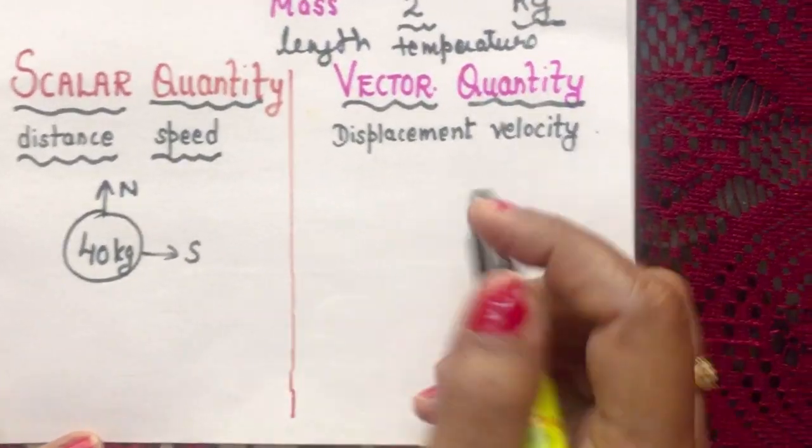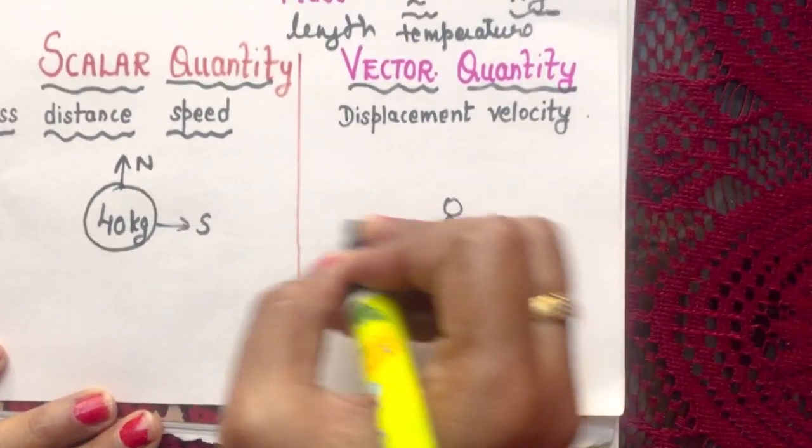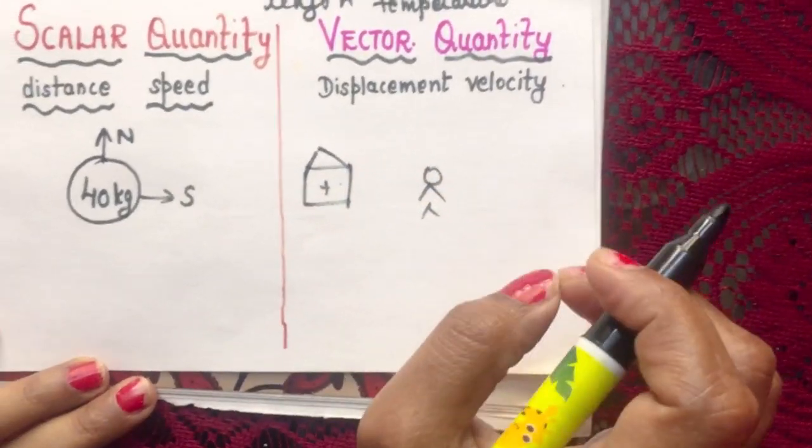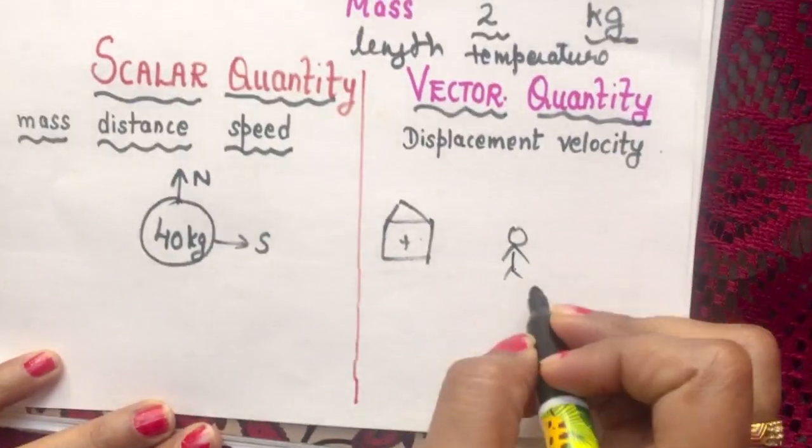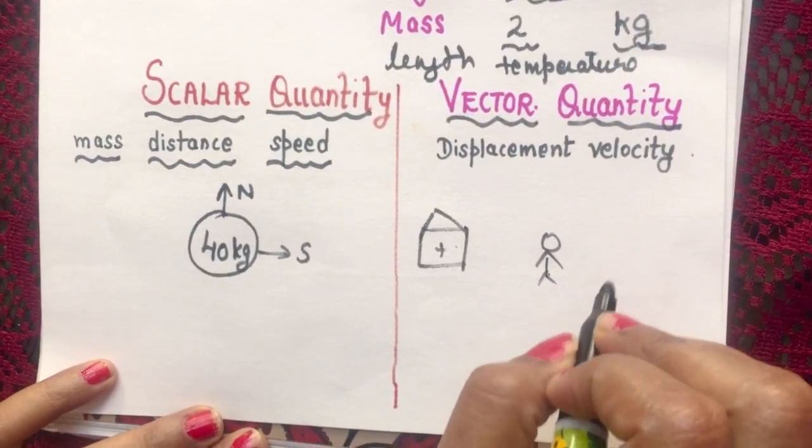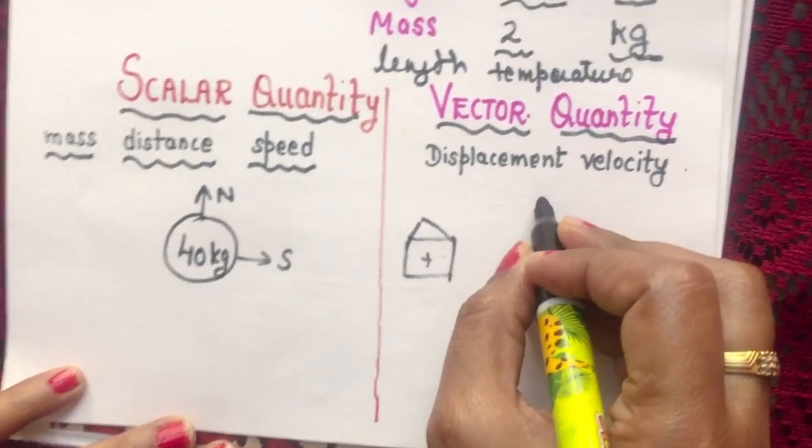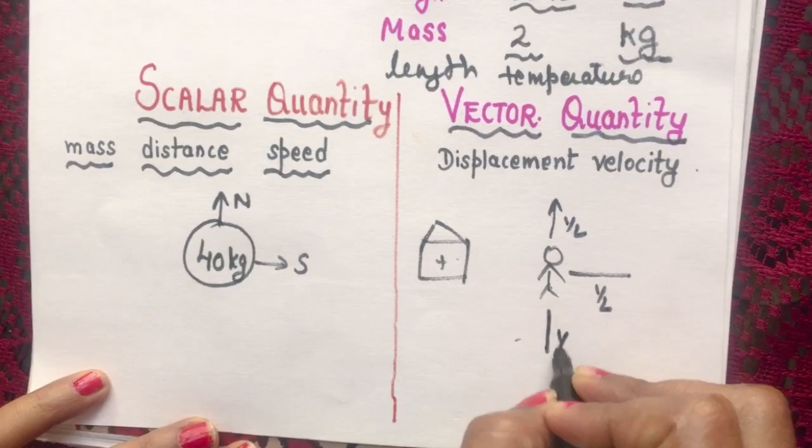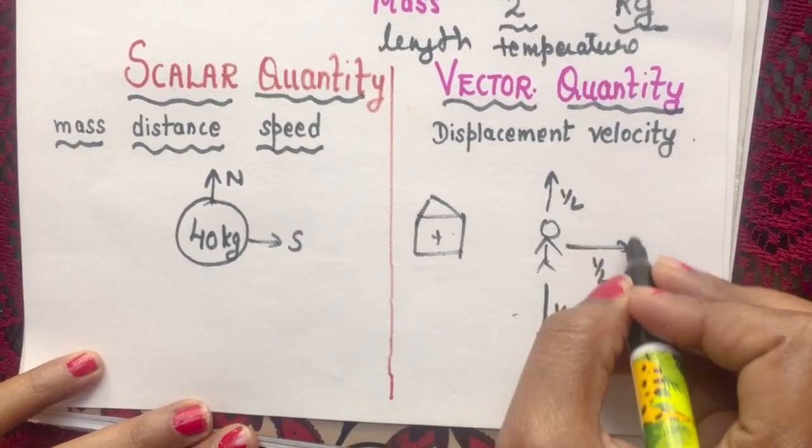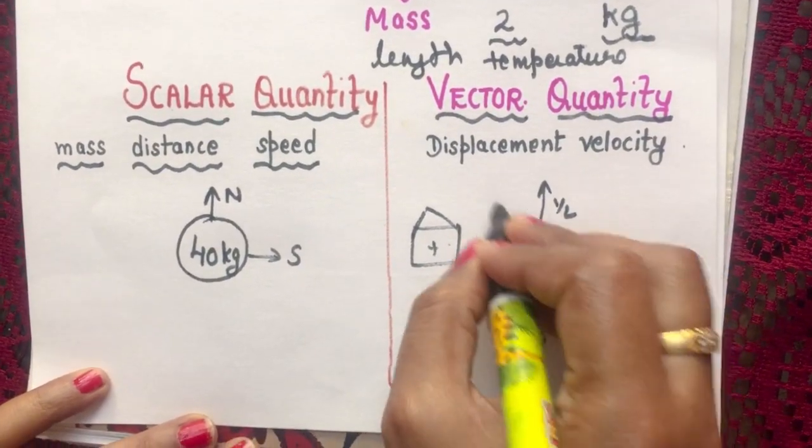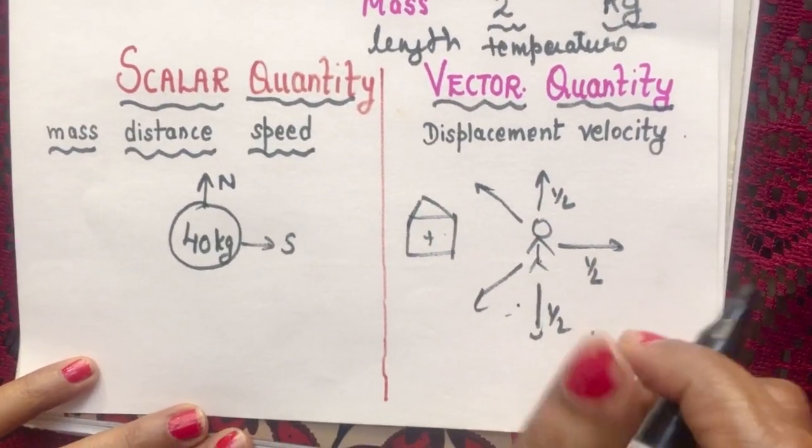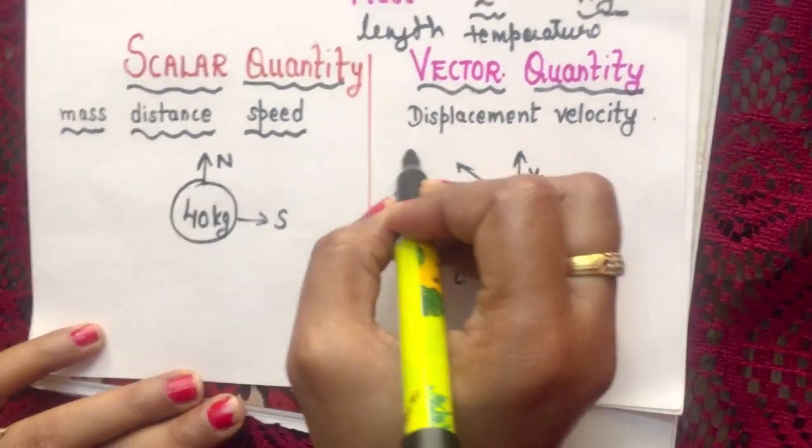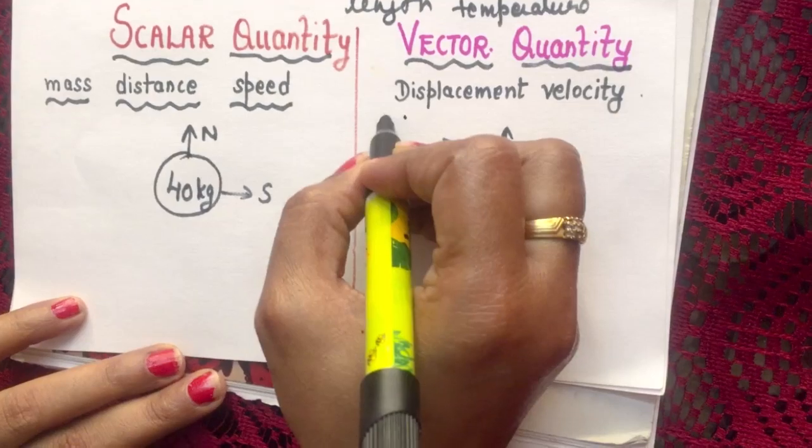Now come to one more example. Suppose you are standing at one point and you have to reach to your friend's house. Now that is half kilometer away from where you are standing. Now your friend tells you to move half kilometer. In which direction will you move? You can move in this direction half kilometer, you can move in this direction half kilometer, this direction also you can move half kilometer. So there are so many possibilities to move along half kilometer.